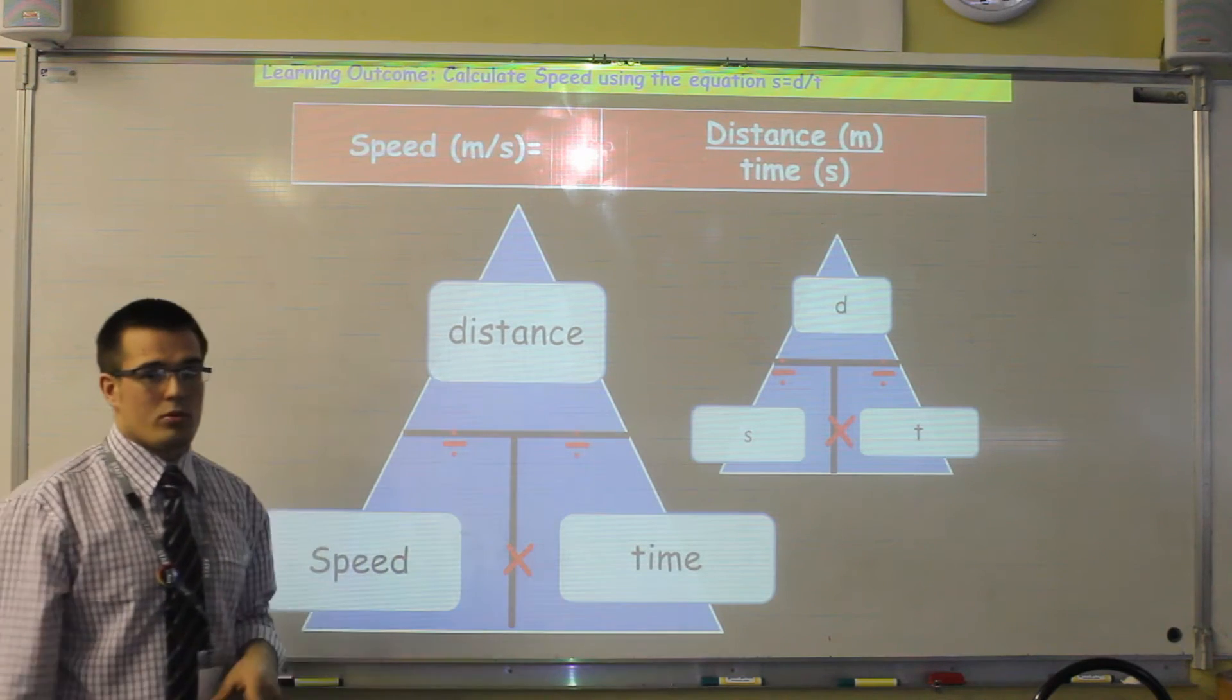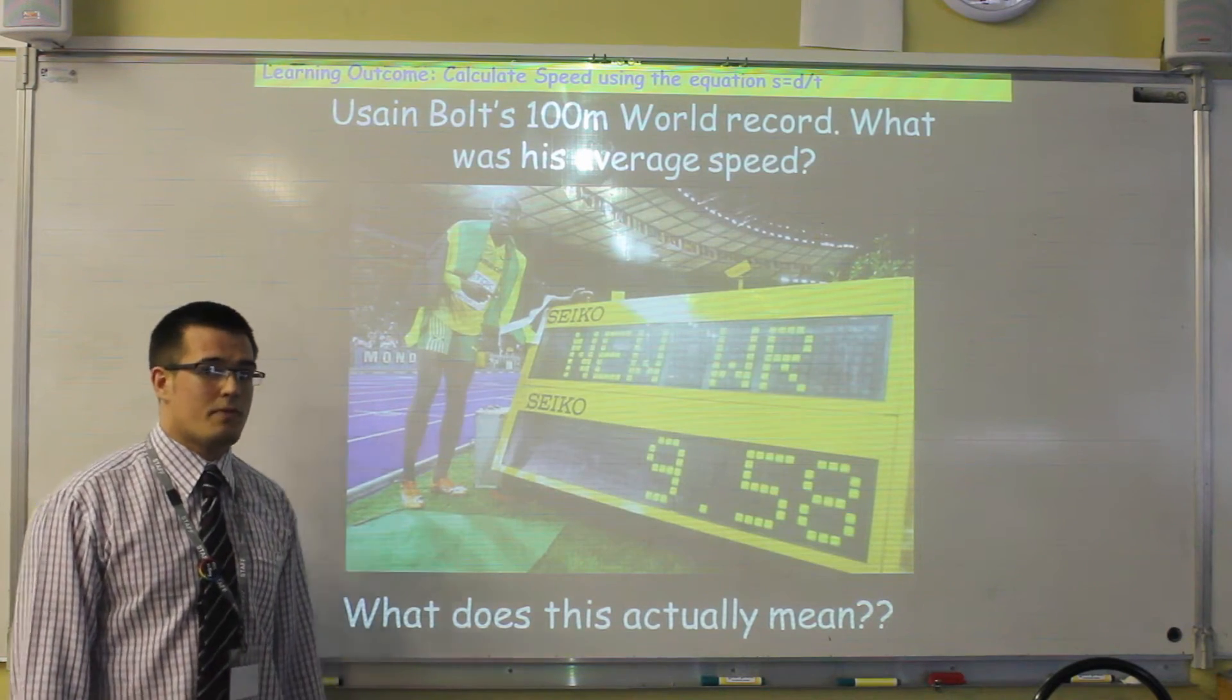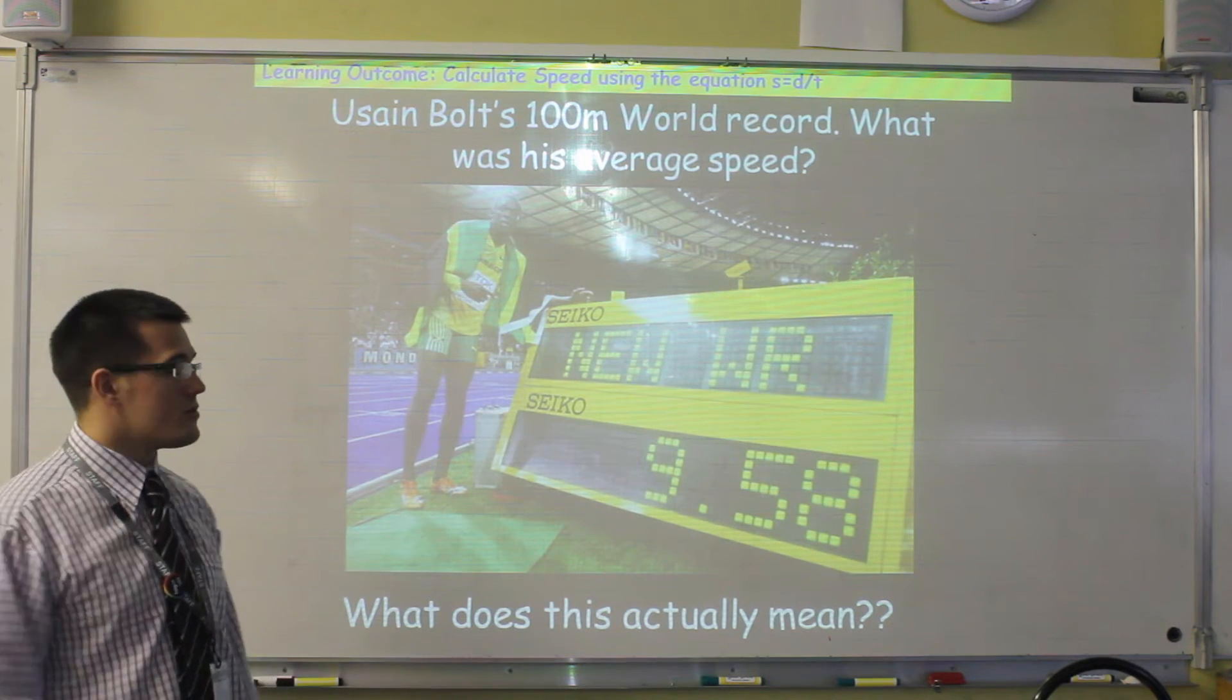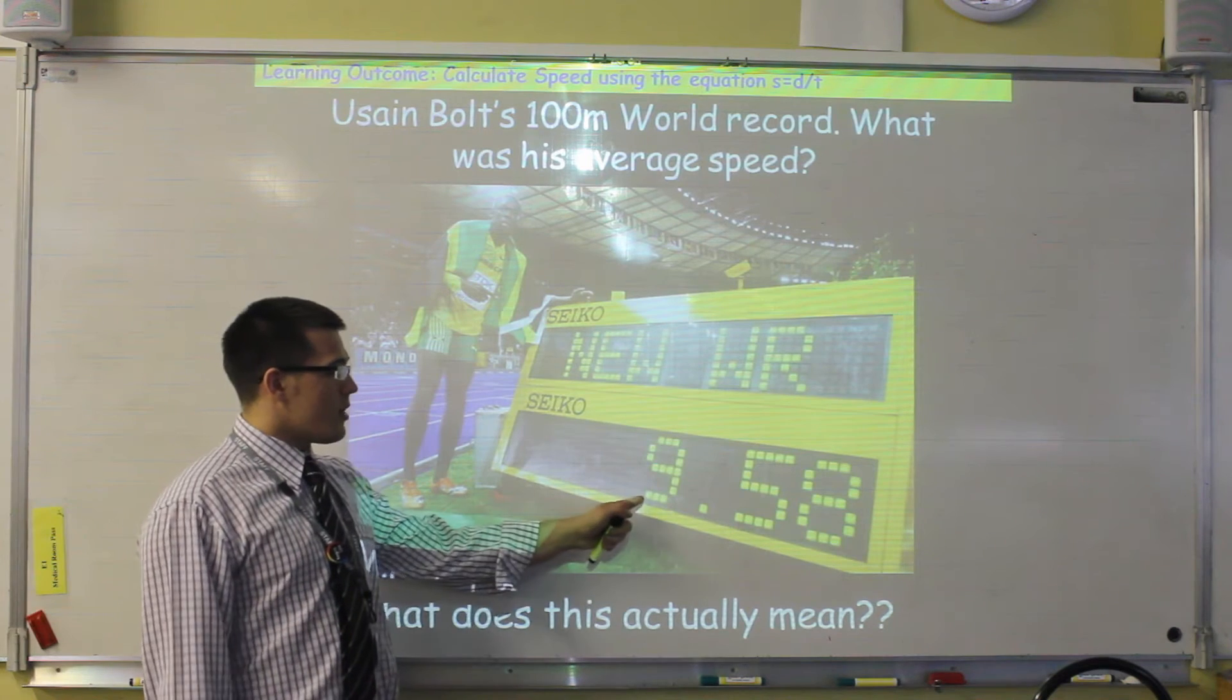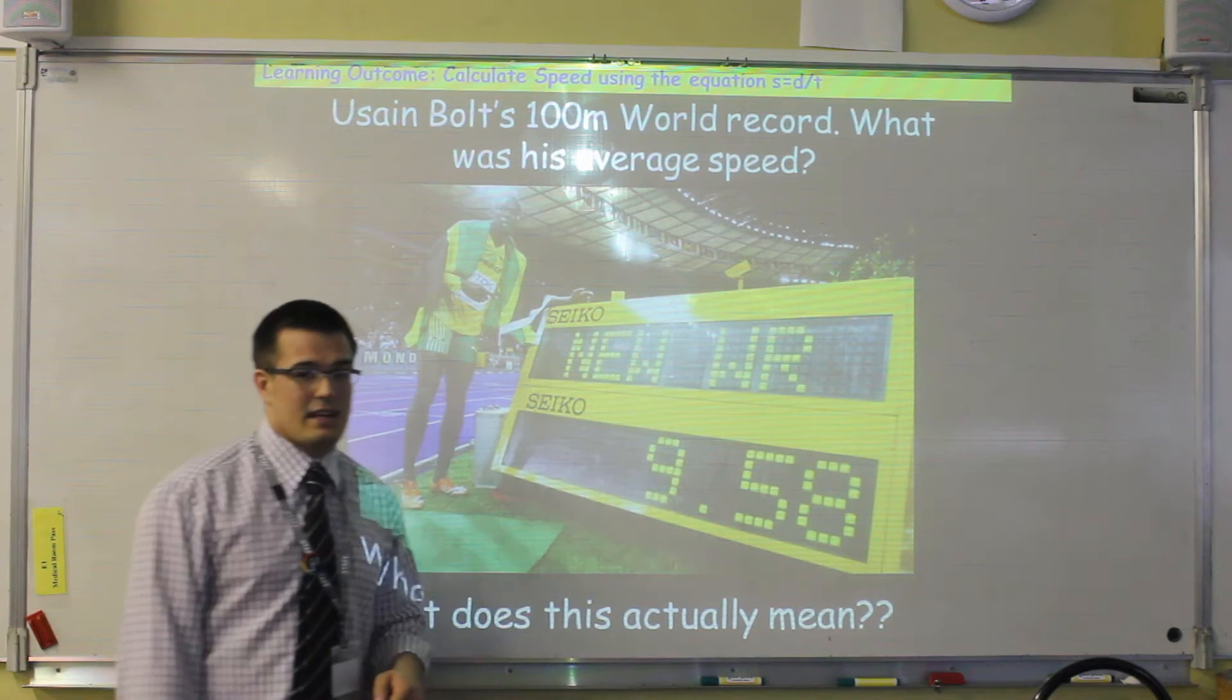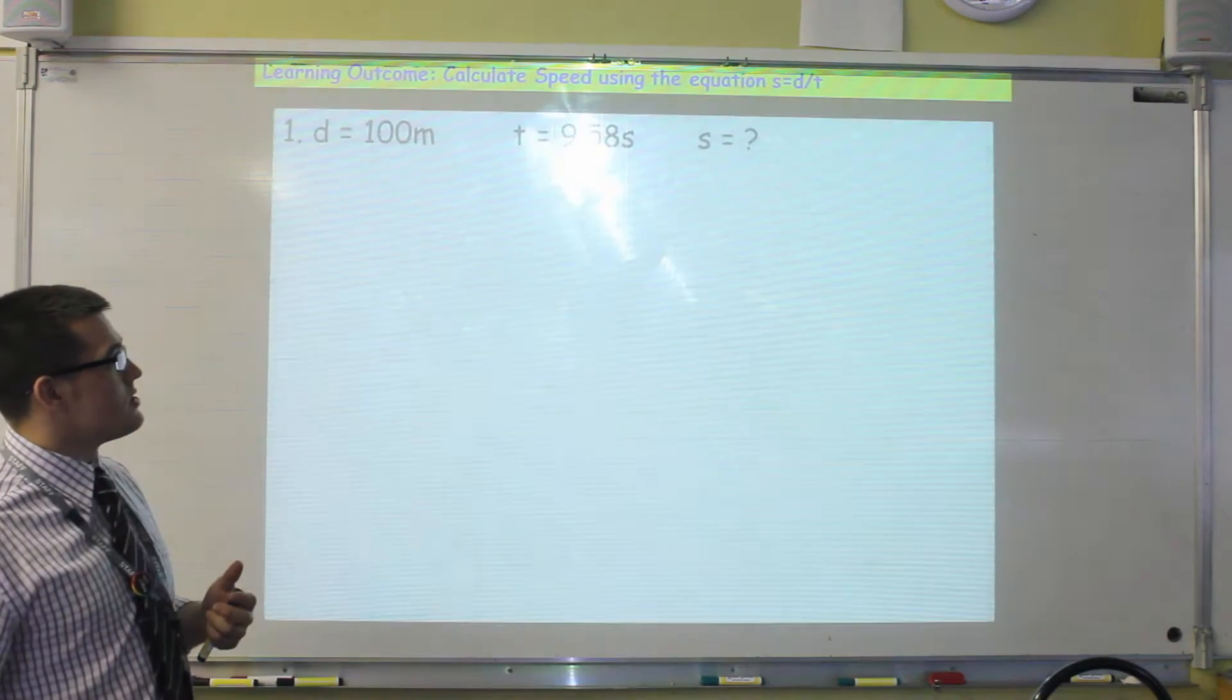So let's have a look at an example that we might be familiar with. This is the fastest man alive, Usain Bolt. He currently holds the world record for the 100 meters. He covered that distance in a time of 9.58 seconds. So we need to actually work out what that actually means in terms of his speed.